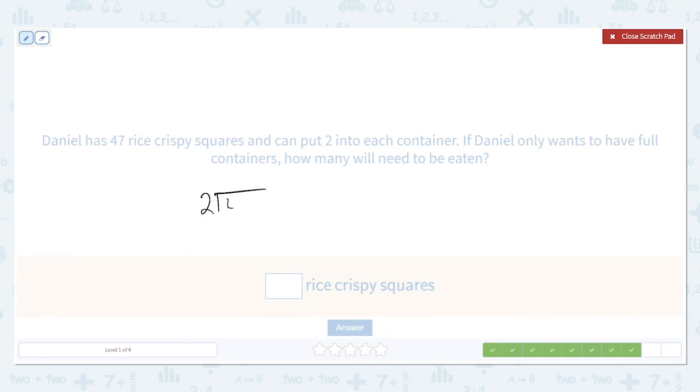So two into 47 goes in twice. Subtract, get zero, bring down the seven, goes in three times with a remainder of one.